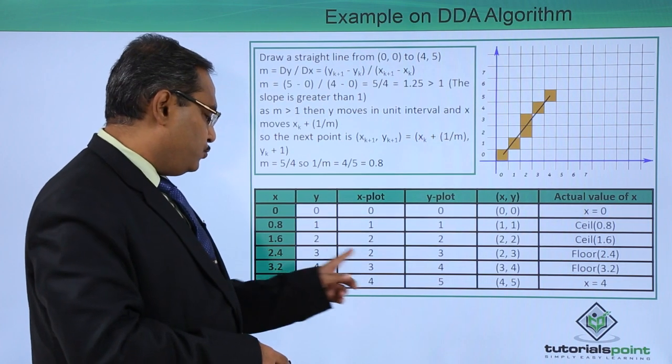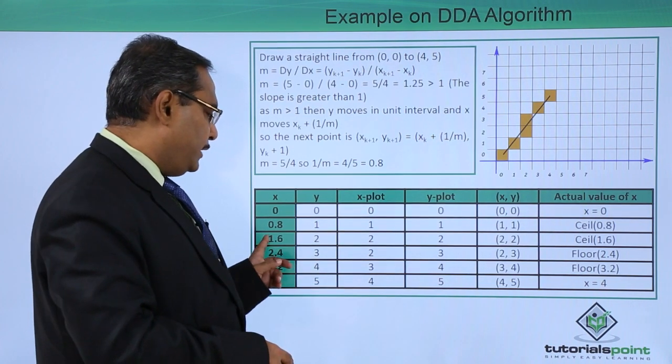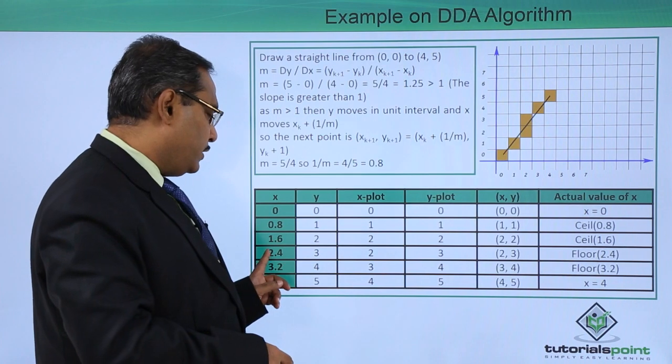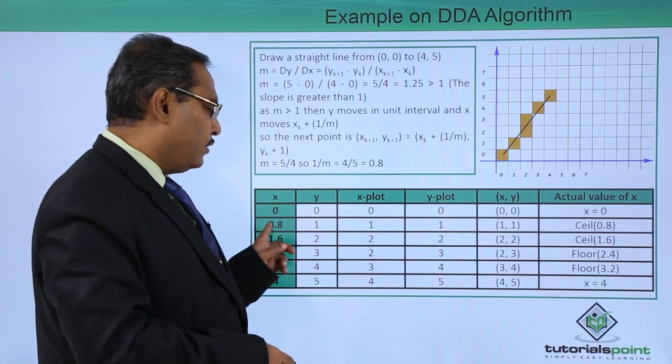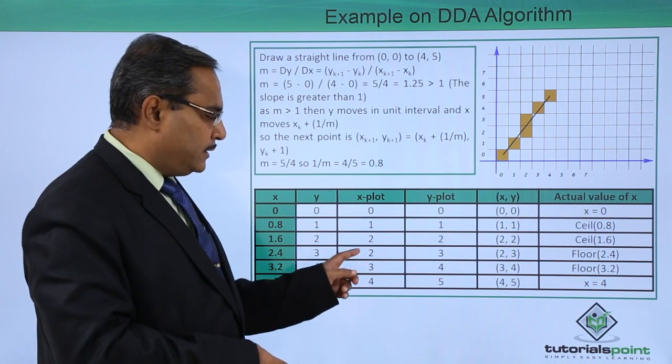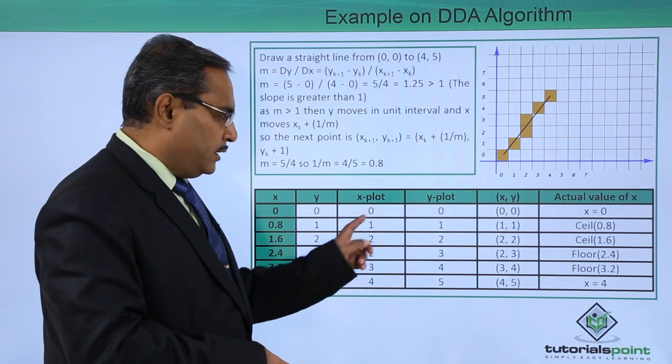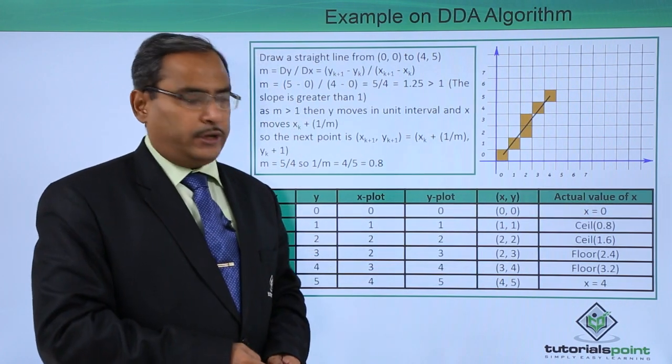It will be converted to 2, it will be converted to 3, it will be converted to 2, it will be converted to 1. Because we applied ceil here, we applied floor here. In this way these are the points which are to be plotted.